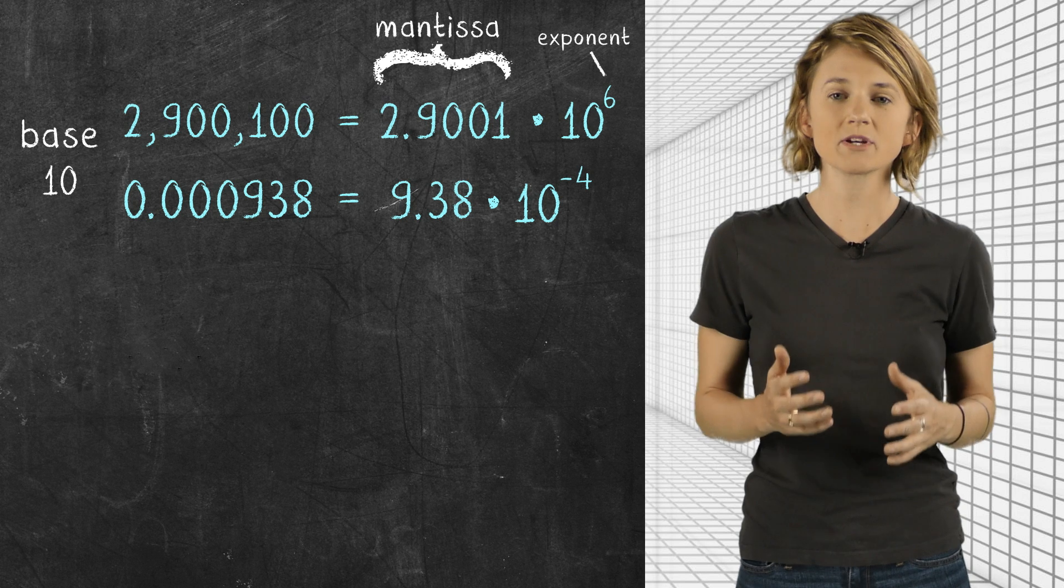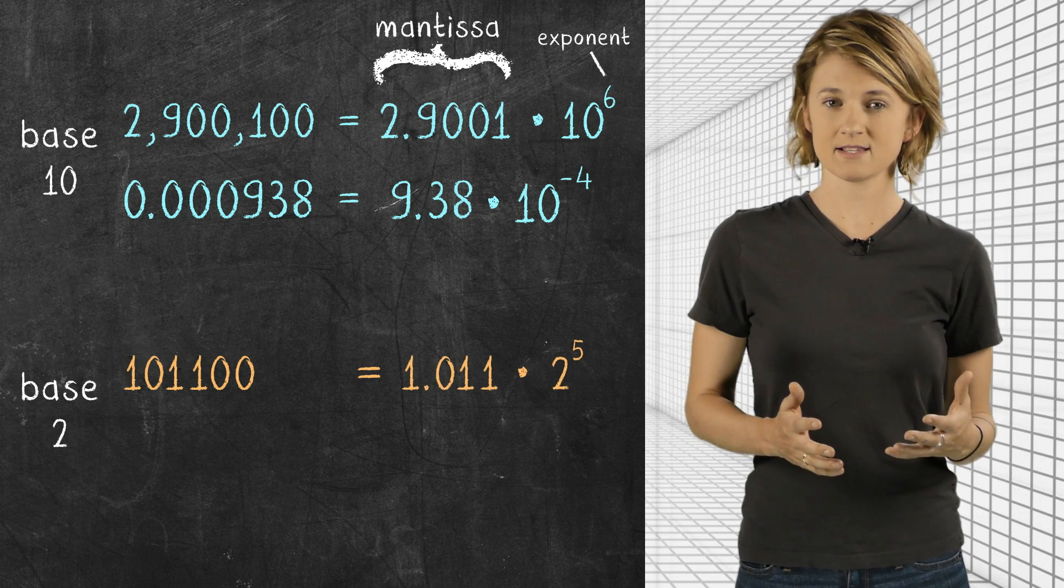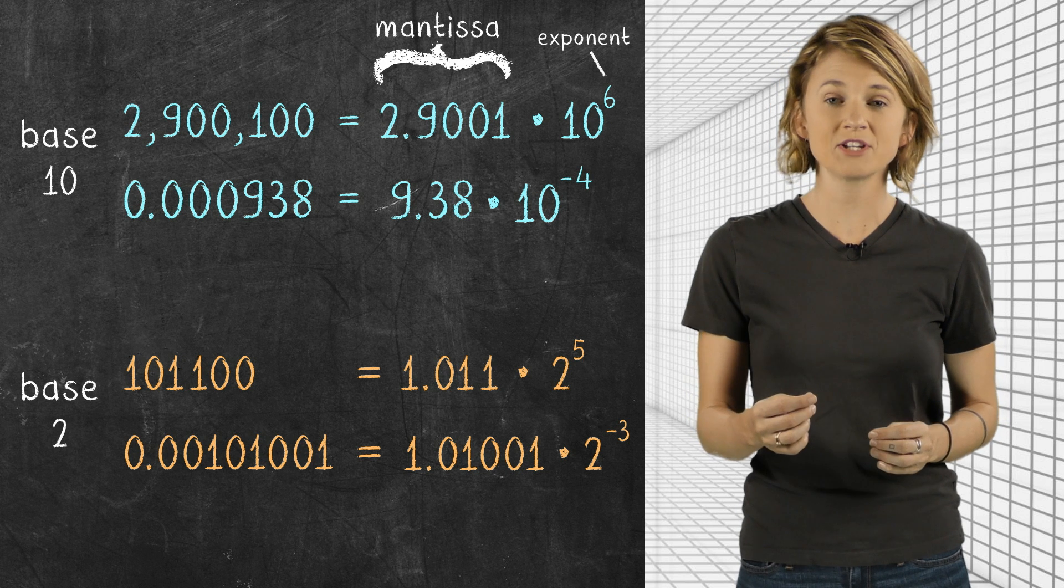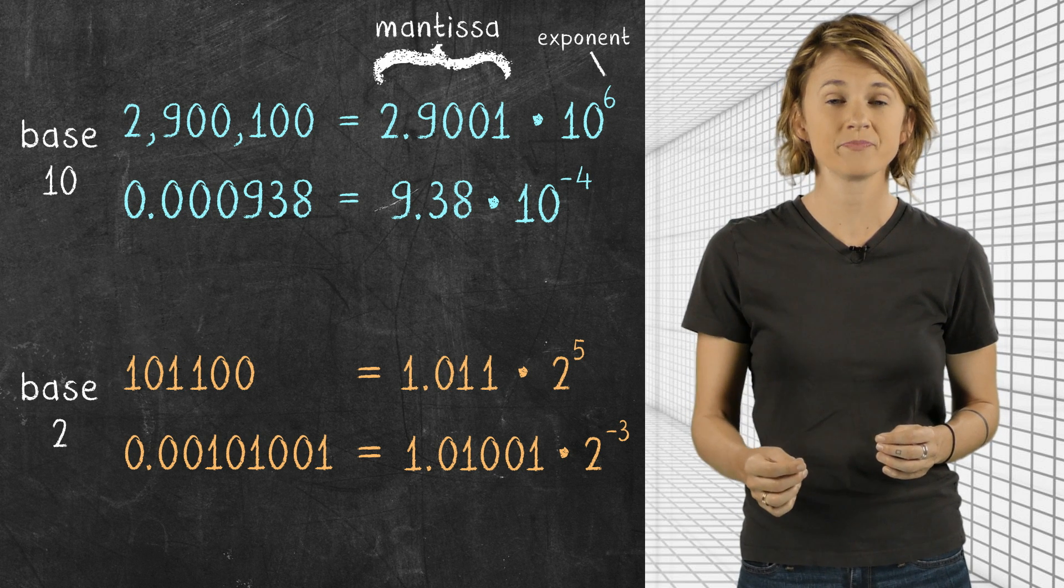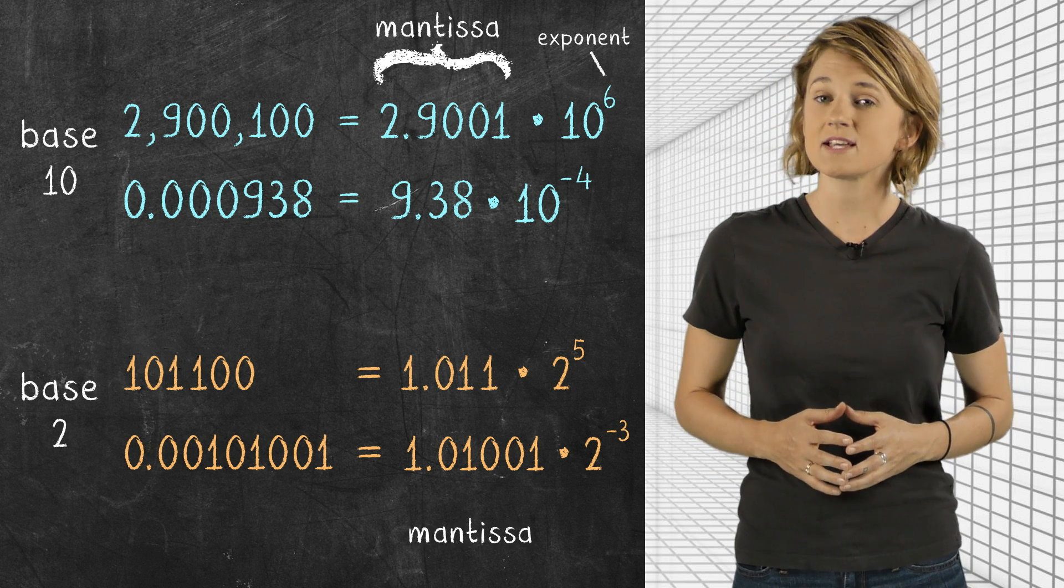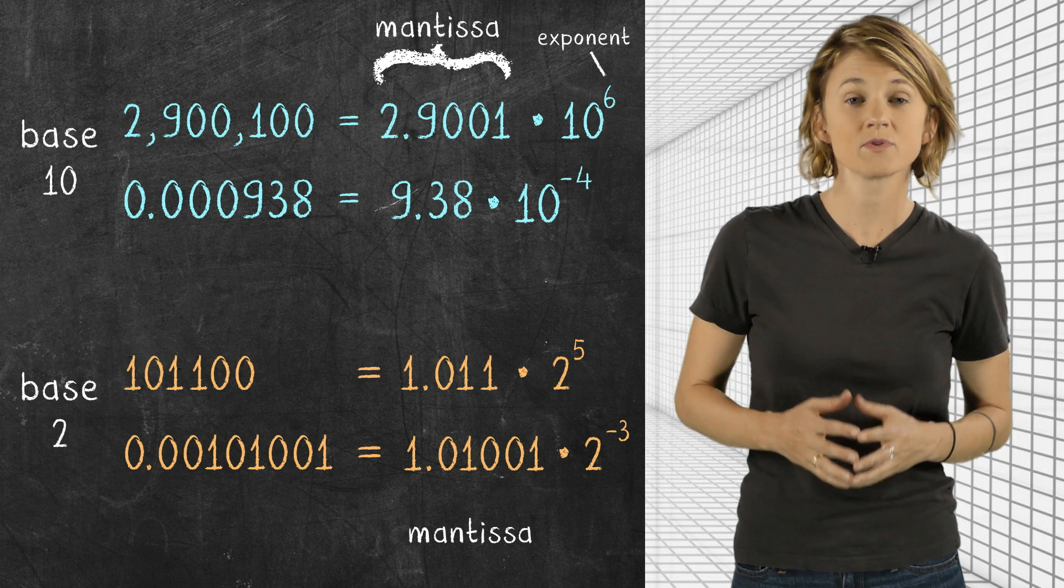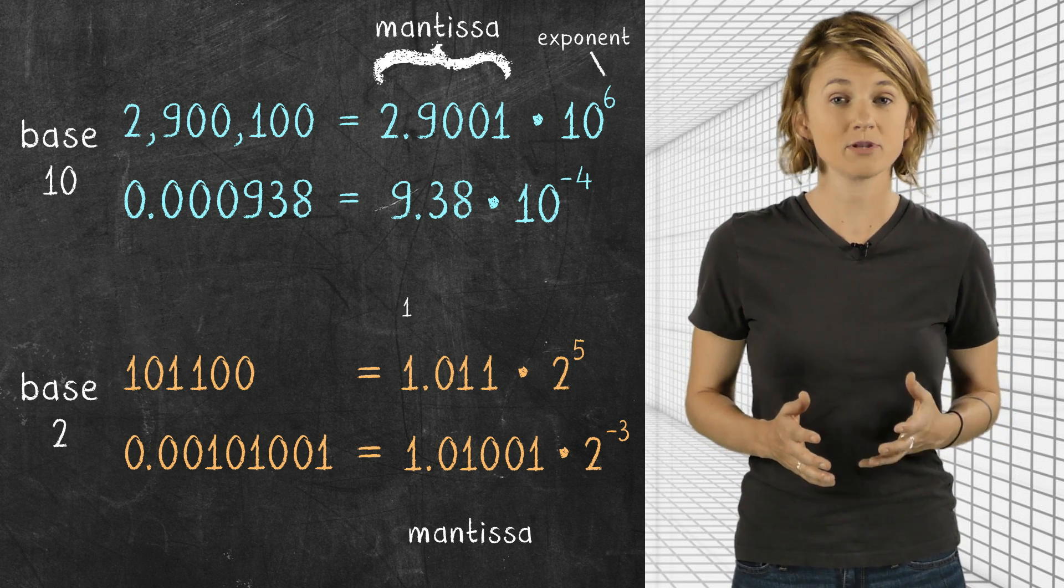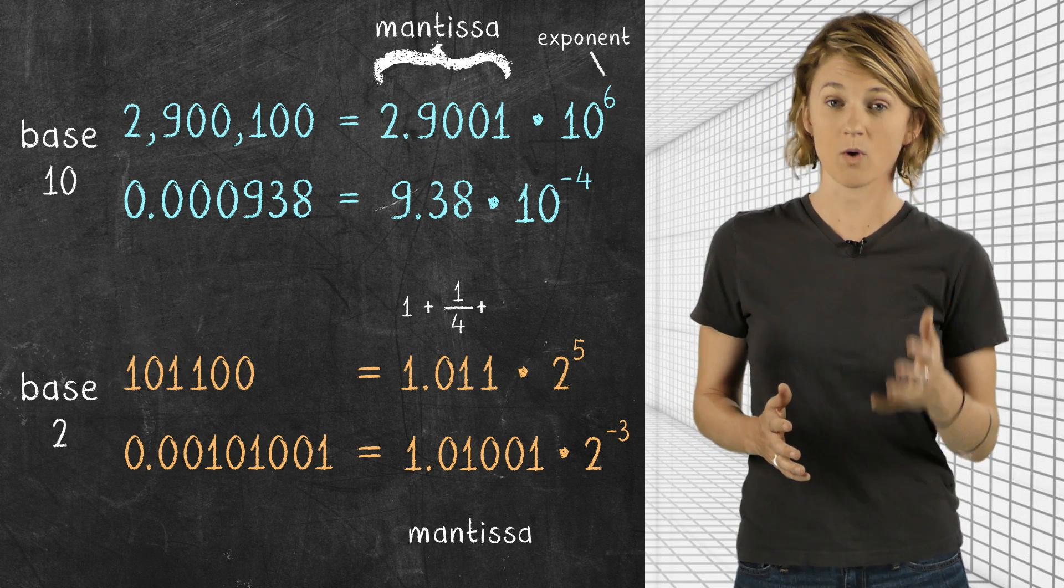Well, the same thing works in base 2. We can write this as this, and this as this, where multiplication and exponentiation is done base 2. In this case, the mantissa is also written in binary. So, 1.011 means 1 plus 1 fourth plus 1 eighth.